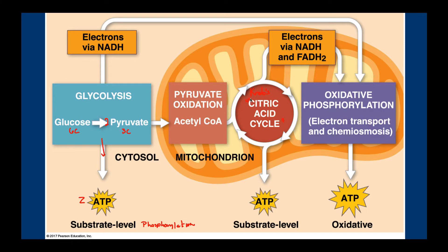In order to get to the Krebs cycle, we have to go through this conversion of the three-carbon pyruvates to acetyl — a two-carbon molecule — and it's going to combine with a coenzyme called coenzyme A. The function of coenzyme A is simply to act as a shuttle, carrying the two-carbon acetyl into the Krebs cycle, because it's the two-carbon acetyl that gets delivered into the Krebs cycle. It's not the full molecule acetyl coenzyme A — just the two-carbon acetyl that goes in.